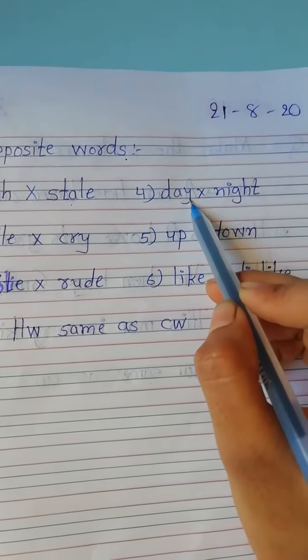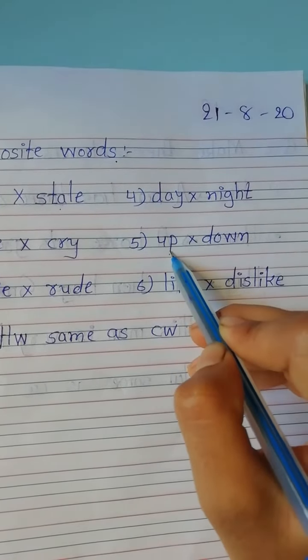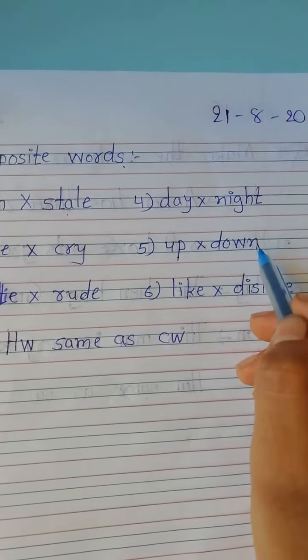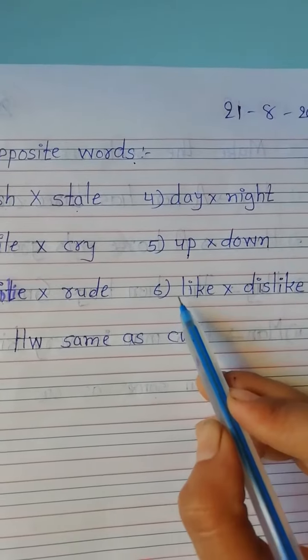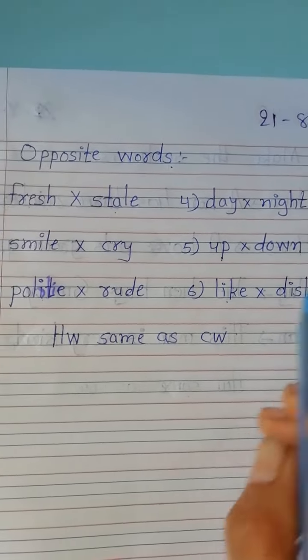Fourth, day. Day, opposite is night. Fifth, up. Up opposite is down. Six, like. Like, opposite is dislike. Students, this opposite word.